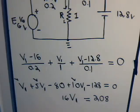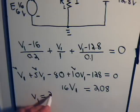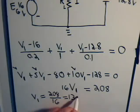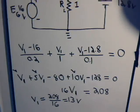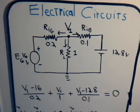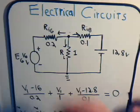We have 16 times V1 equals 208, so V1 equals 208 divided by 16. Putting that on the calculator, that's 13 volts. So we have determined that this node up here has a potential of 13 volts.